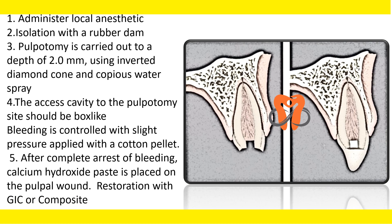The procedure for partial pulpotomy involves: first, administering local anesthesia and isolating the tooth with rubber dam. Pulpotomy is carried out to a depth of 2 mm using an inverted cone bur, and the access cavity is shaped like a box. Bleeding is controlled with slight pressure applied with a cotton pellet. After complete arrest of bleeding, calcium hydroxide paste is placed and glass ionomer or composite restoration is placed on top.